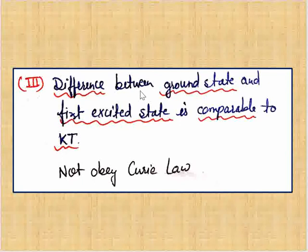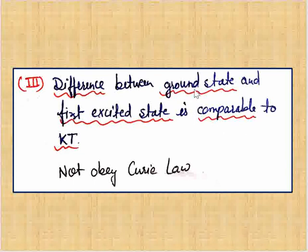The third condition is when the difference between the ground state and the first excited state is comparable to KT. In this case, the substances do not obey the Curie law.